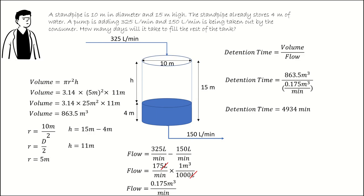The question asks, how many days will it take to fill the tank? Converting, we know that there is 60 minutes in an hour and there is 24 hours in a day. Multiplying 4,934 minutes by 1 hour is the same as 60 minutes, the minutes will cancel. Multiply again by 1 day is the same as 24 hours, the hours will cancel, leaving us with days. The detention time, 4,934 minutes divided by 60, divided by 24, gives us a detention time of 3.4 days.